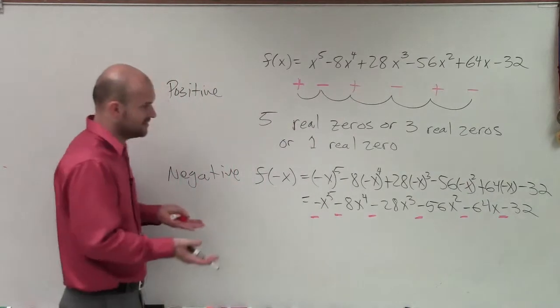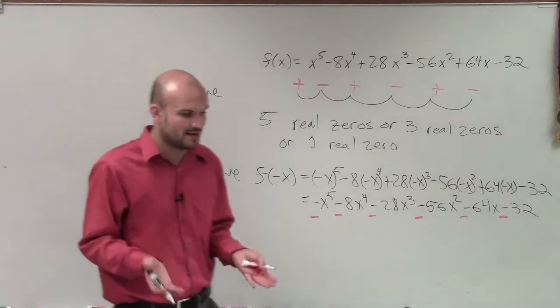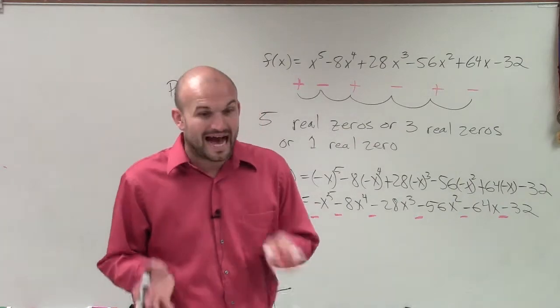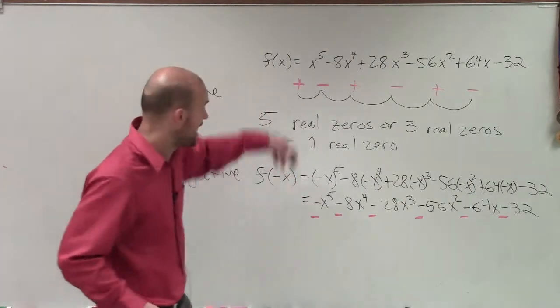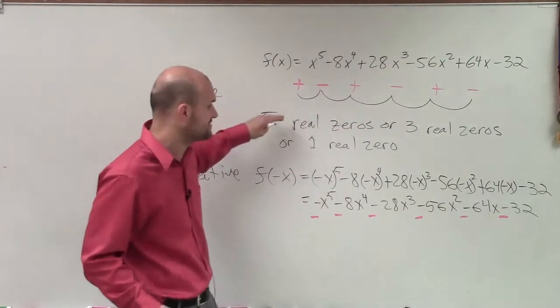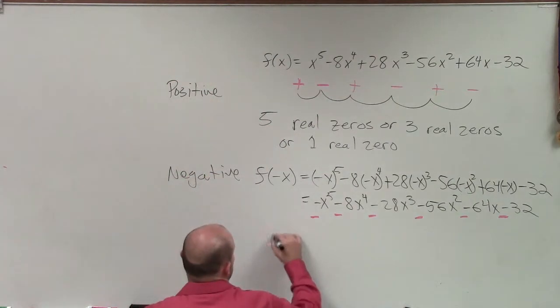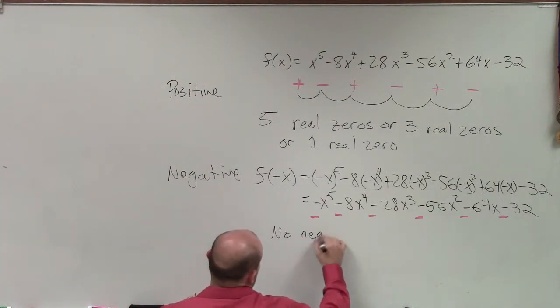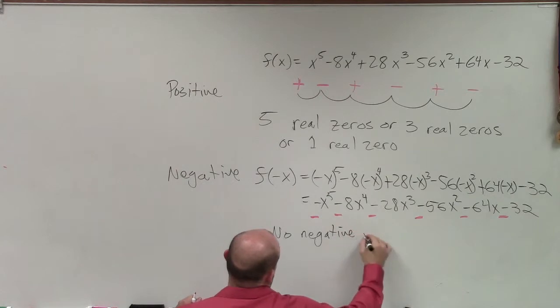So when I'm looking at my zeros, and I look at the possible rational test, I know that none of my zeros are going to be negative. I have a possibility of positive zeros, but there are going to be no negative real zeros.